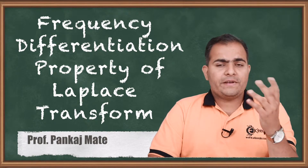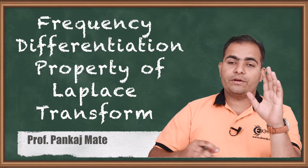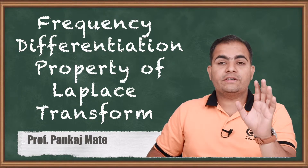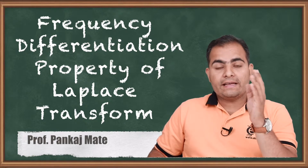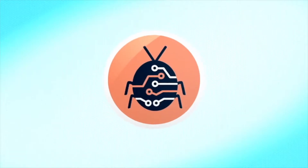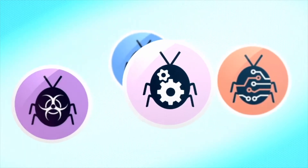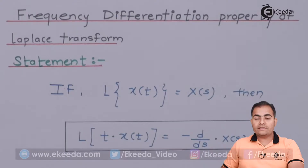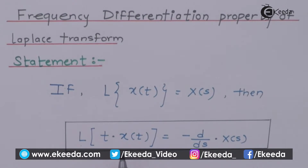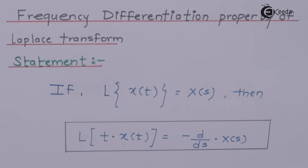In previous videos we have studied the time differentiation property. Now we are going to differentiate using the frequency domain, or we can differentiate using the S domain of the Laplace transform. The Laplace transform of T multiplied by X(T) is nothing but minus D by DS of X(S). This is the simple property.